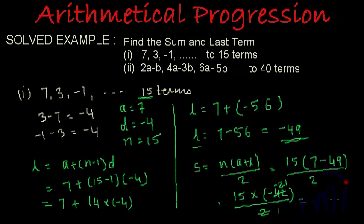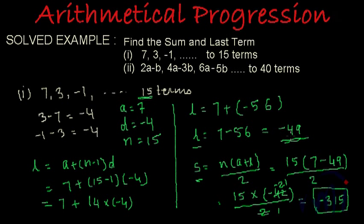Minus 21 multiplied by 15 gives us minus 315. So the sum is minus 315 and the last term is minus 49. These are the solutions for the first progression: l equals minus 49 and sum equals minus 315.